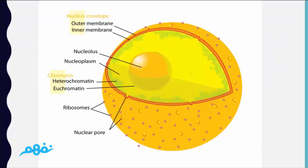Looking at the structure of the nucleus in this diagram: the nuclear envelope consists of two membranes — the outer membrane and the inner membrane. The nucleolus is visible here, as is the nucleoplasm. The chromatin, shown here in green, contains heterochromatin and euchromatin. The ribosomes and the nuclear pore are also labeled here.